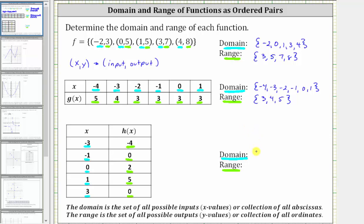So the domain in curly brackets is {-3, -1, 0, 1, 3}. And the range, in order from least to greatest, is {-4, 0, 2, 5}. Again, we only list zero once.